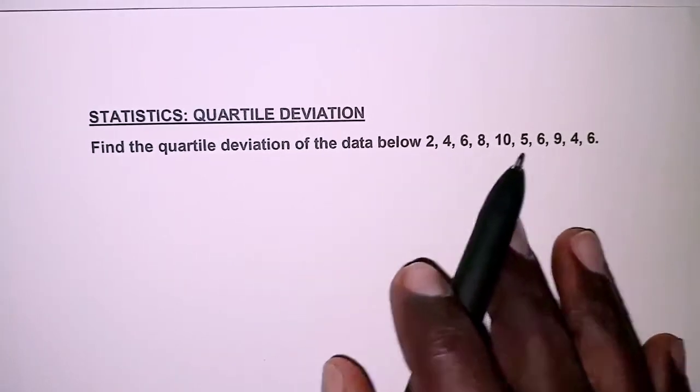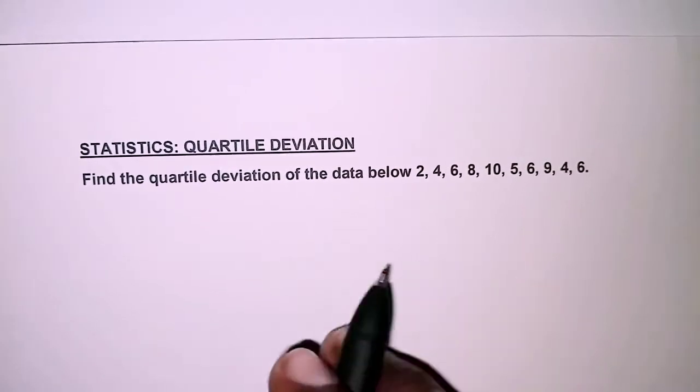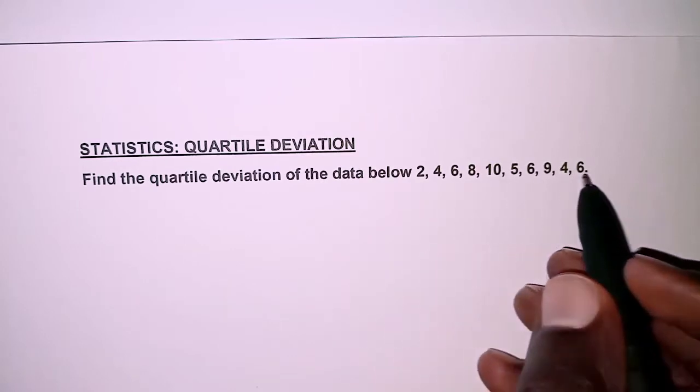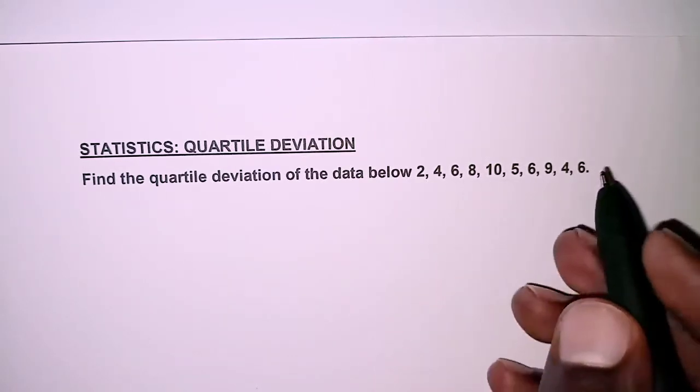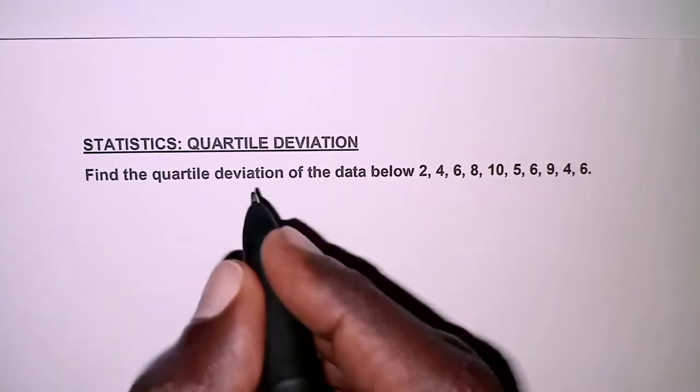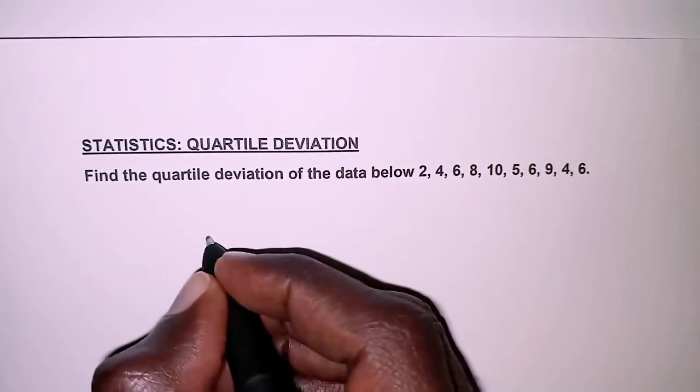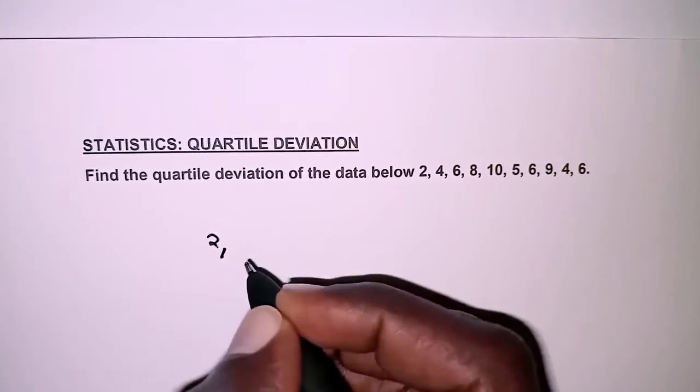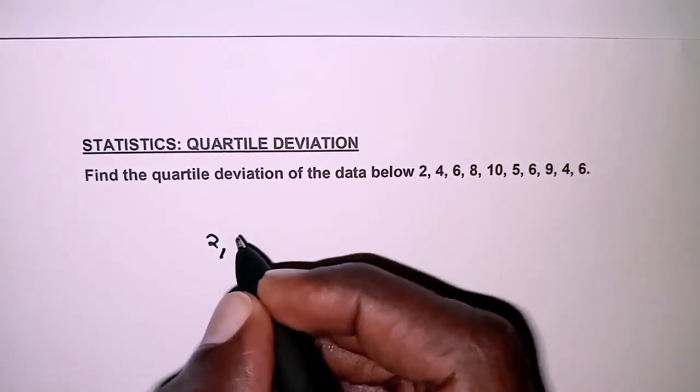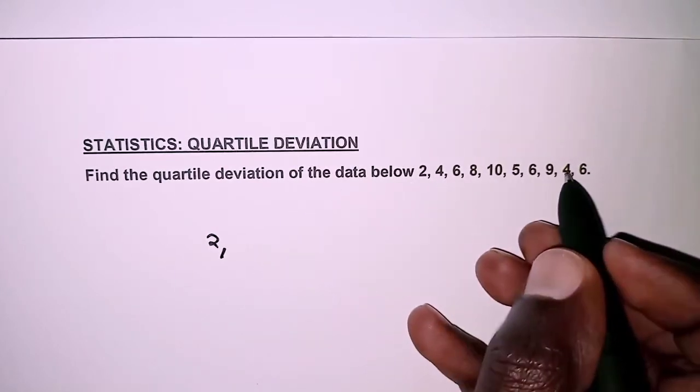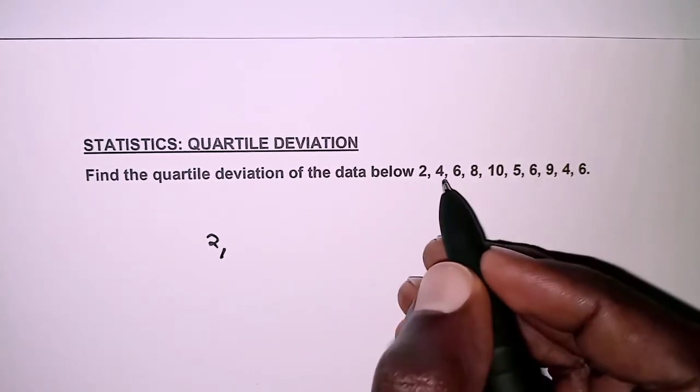The first thing for such ungrouped data is we are simply going to arrange the data in ascending order. So we're going to begin with 2. So far we only have 1 two. Then you have 4 because there's no 3, so we have 4.